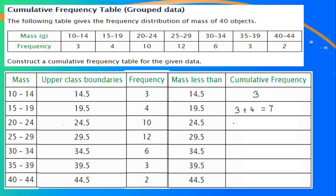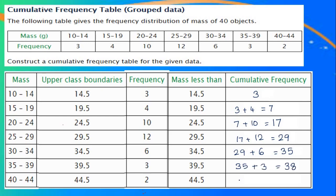For the third one, less than 24.5, we add the three frequencies together: 7 plus 10, which is 17. For the next one, 17 plus 12 is 29. Then, 29 plus 6 is 35. Mass less than 39.5 is 35 plus 3, which is 38. And for the last one, 38 plus 2 is 40. When you add all the frequencies together you get 40.